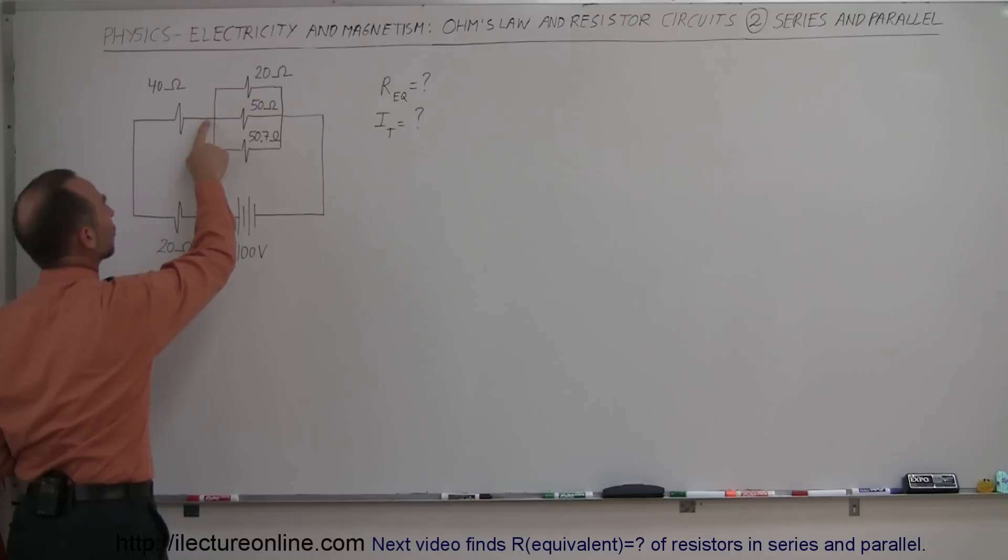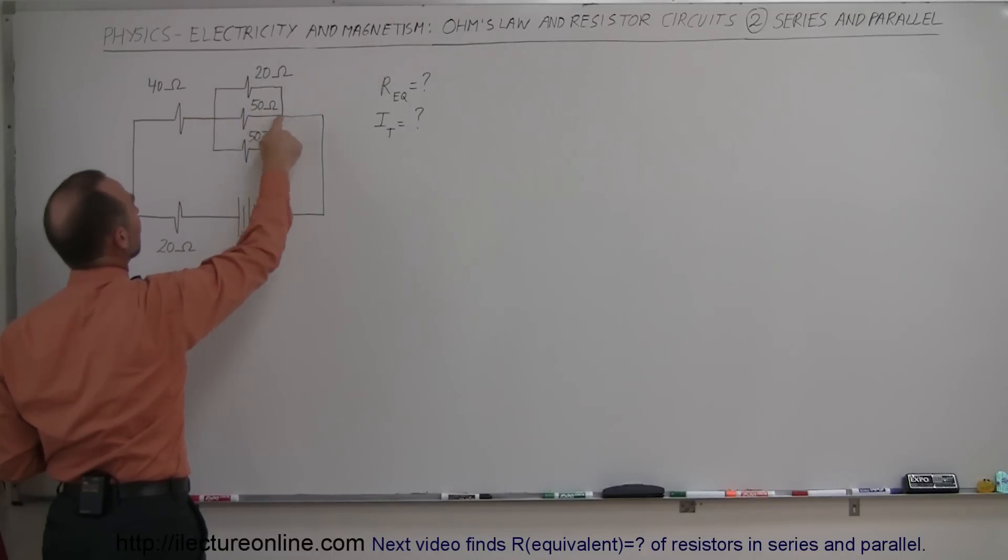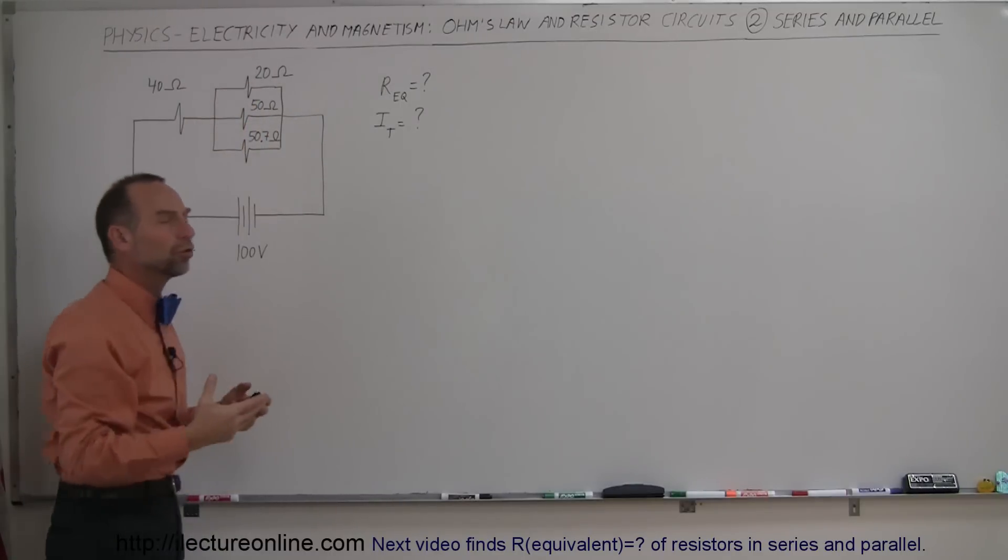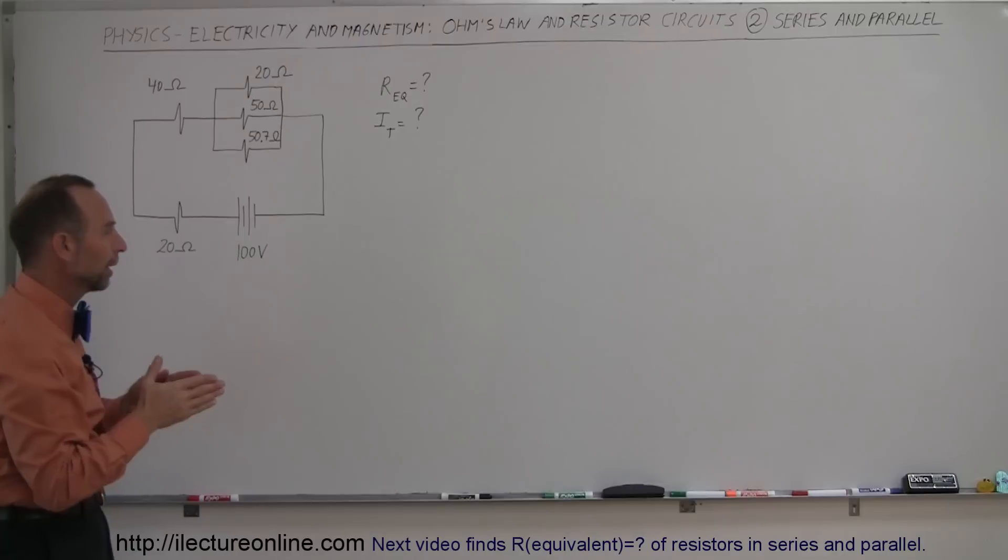But when we get to this branch right here, the current can either go in the top branch, the middle branch, or the bottom branch. It has a choice. So whenever there's a choice for the current, there's multiple branches to get to the same point, then those components are in parallel.